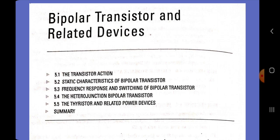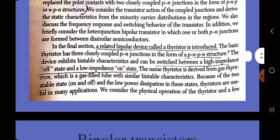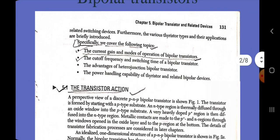Specifically, we cover the following areas: the current gain and modes of operation of bipolar transistors, the cutoff frequency and switching time of bipolar transistors, the advantages of heterojunction bipolar transistors, and the power handling capability of thyristors and related bipolar transistors.